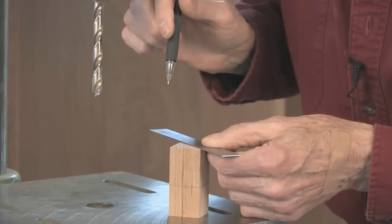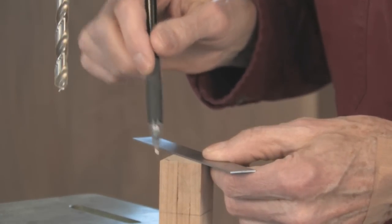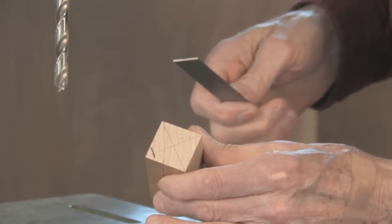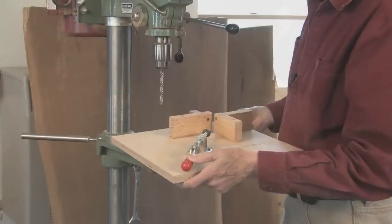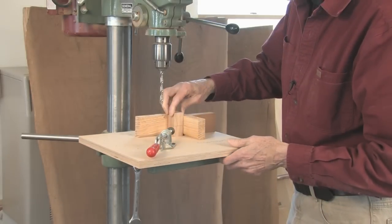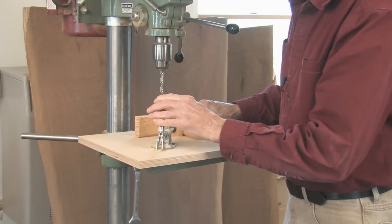What I would do is draw a diagonal from corner to corner so I could find the center of the blank, and center it underneath so that the brad point would hit the bullseye right in the middle of the blank.